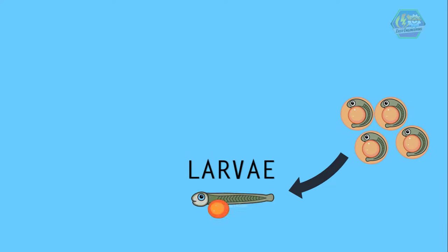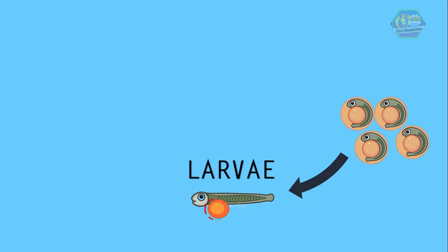Next is the larva stage. Once the eggs are hatched, they are then called larvae. Butterflies also have a larva form. Just like a chick, new larvae have a yolk sac, which serves as their food supply inside the egg. It provides them two to four days of survival, but once their eyes and mouth are developed, they can now eat from the outside.